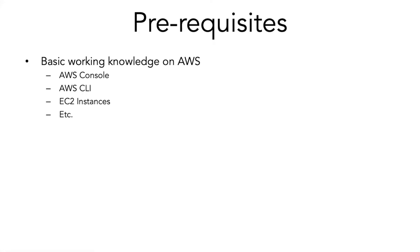There are some prerequisites to this course. You should have a basic working knowledge of AWS — that means you should know what the AWS console is and how to use it. You should have a basic understanding of the AWS command line interface, what EC2 instances are, what a VPC is, what a load balancer is, auto scaling, etc. So basically you should have a basic knowledge of AWS essential services.